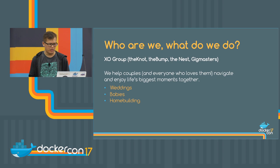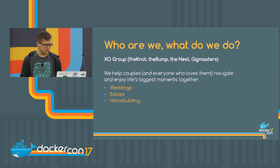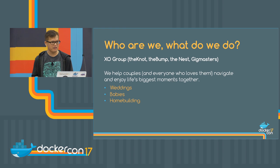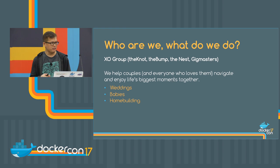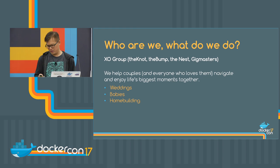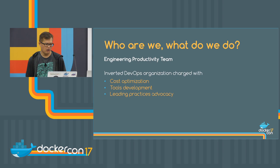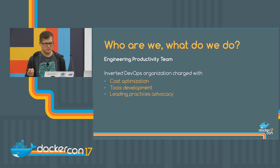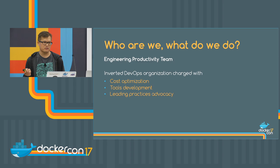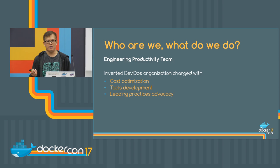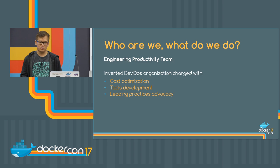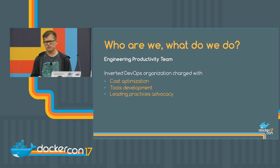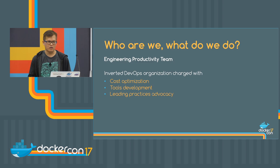A little bit about who we are and what we do. We're XO Group — not Excel Communications, the telco. We cover people's special moments like weddings, babies, and home building. The team I work on is called the Engineering Productivity Team. We're a DevOps group with three main responsibilities: reducing cloud costs, developing tools, and leading practices — recommending the best approaches for our developers.